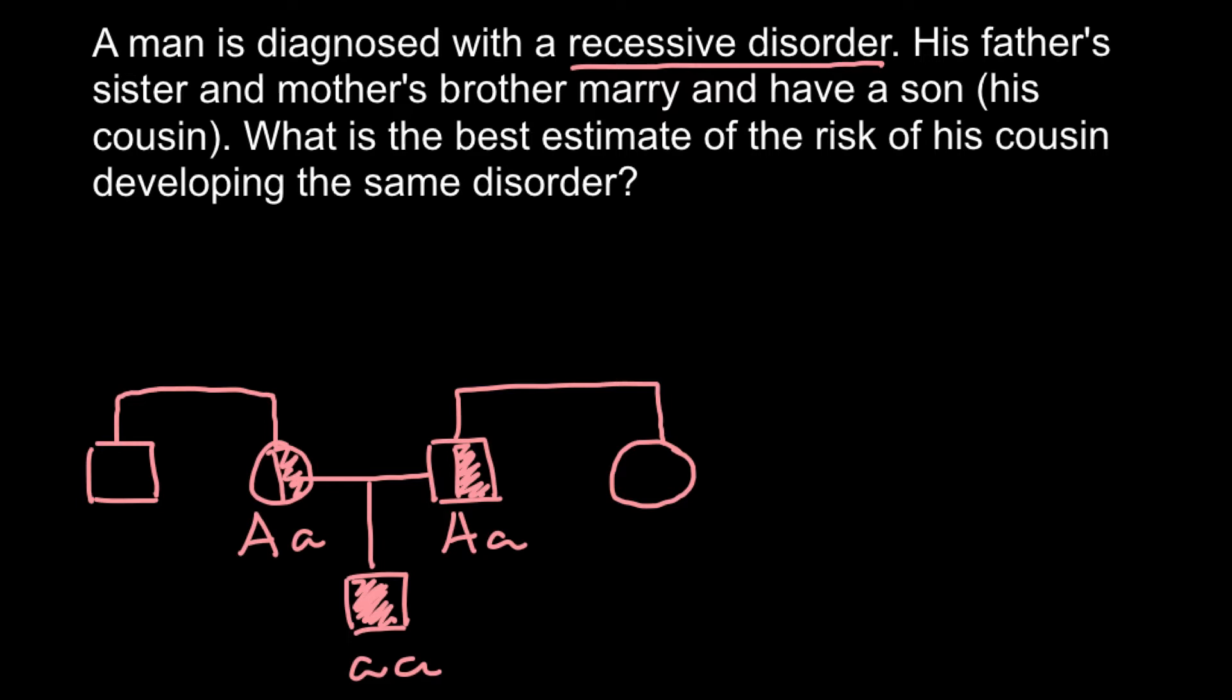They have a son. We have to find the risk for the son also to be affected, to have genotype small a small a. We also have to add grandparents here.